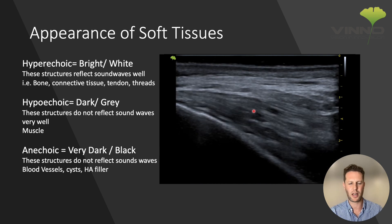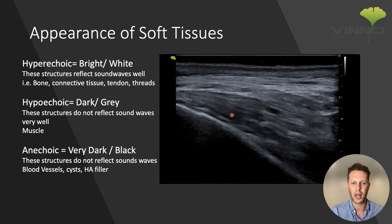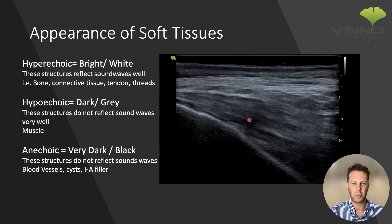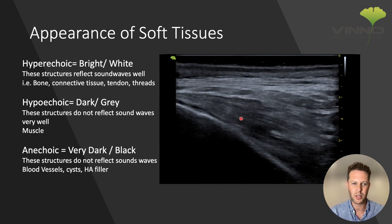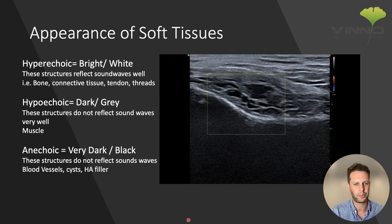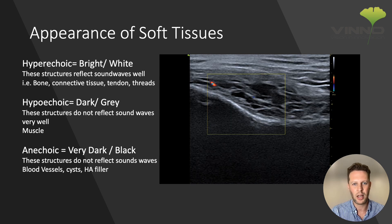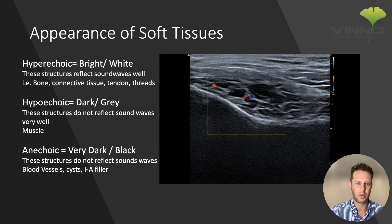Anything that lets the sound wave completely pass through it, such as fluid, cysts, or even HA filler, is going to appear black or very dark on ultrasound — we term that anechoic. HA filler can be seen in the same temple region as these little blobs of anechoic structures. If we play that, you can see that it looks different to the surrounding muscle tissue.